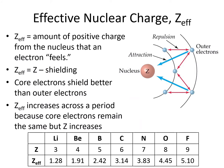All of the periodic trends are based on one concept: effective nuclear charge. Effective nuclear charge, Z effective, is how much positive charge from the protons in the nucleus an electron feels. Typically, we will focus on an electron in the outer shell of the atom. The electron will not feel the full positive charge of the protons because the electrons closer to the core block or shield some of that positive charge from reaching the electron on the outside. Although electrons in the same shell create a little shielding, they do not generally create enough to affect periodic trends, so we will focus on shielding from the core electrons.